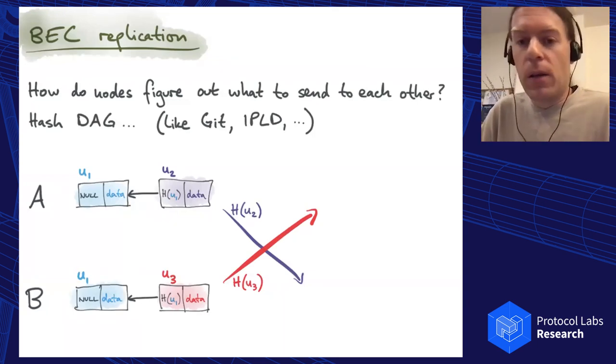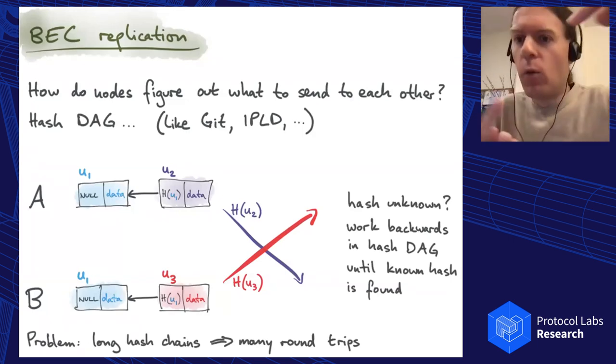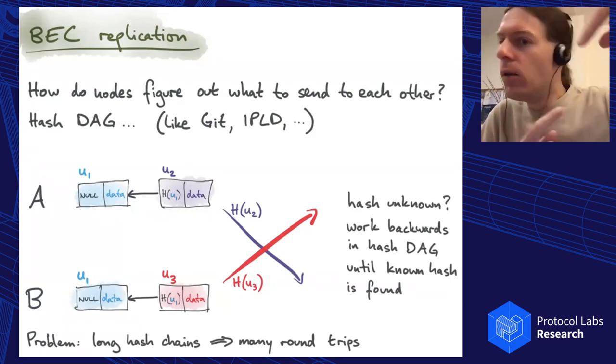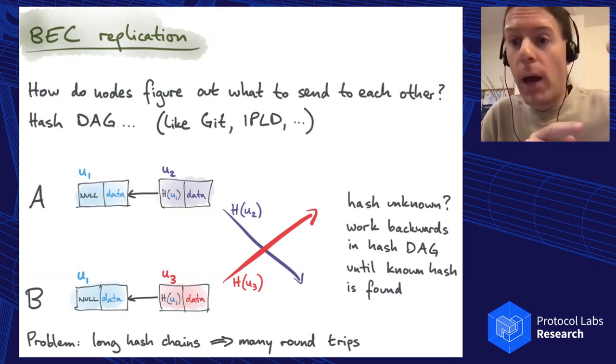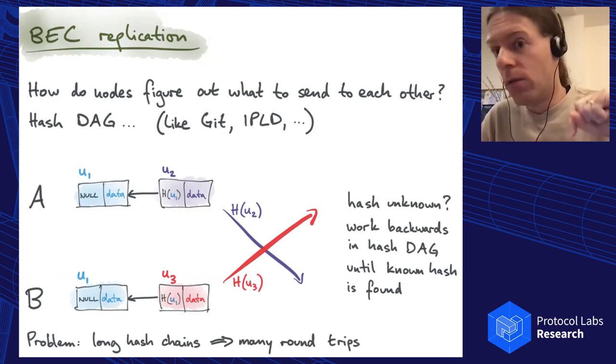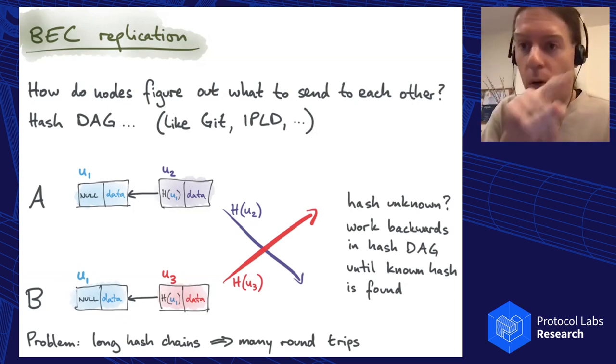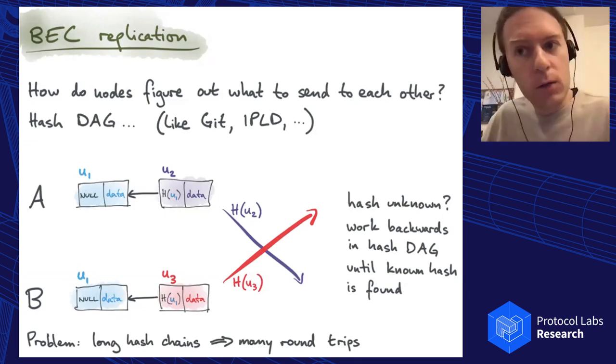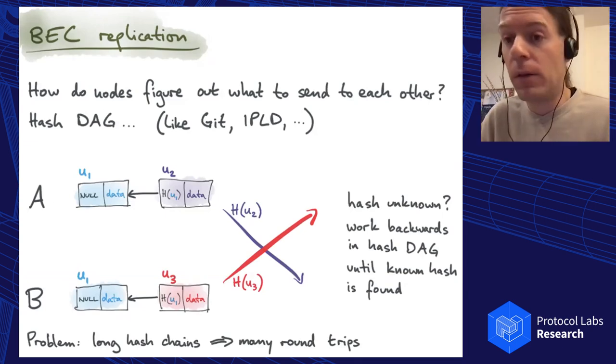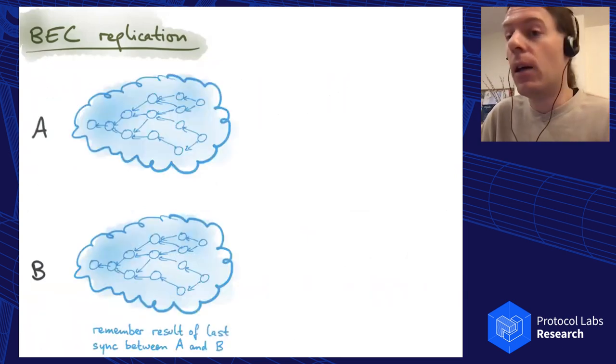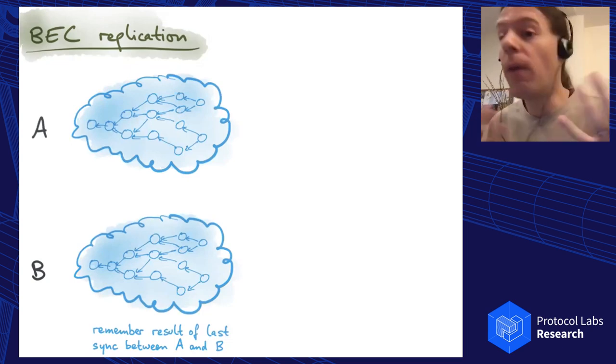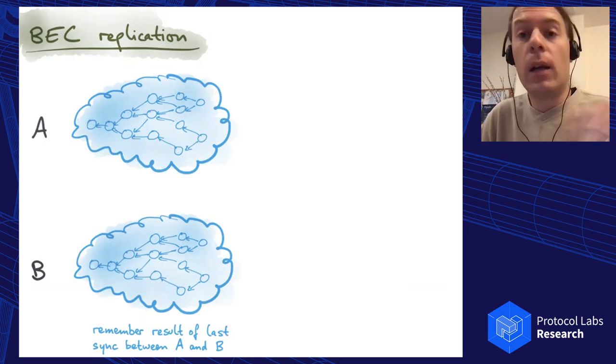The difficulty now, the annoying thing, is that if the hashes are not the same you have to walk backwards in this graph until you find the common ancestor where the hashes are known to the other side. That involves a lot of round trips back and forth as you go step by step backwards in this hash graph. If your hash graphs are very long this becomes very slow. So we developed an optimized algorithm which can sync up these hash graphs very efficiently, usually in just a single round trip. Occasionally it can require more round trips with a small probability.